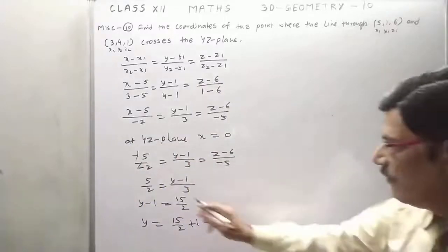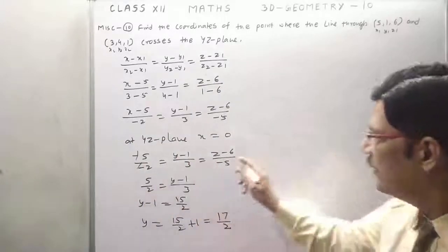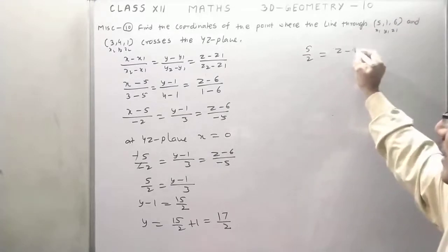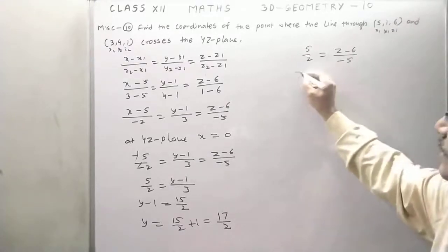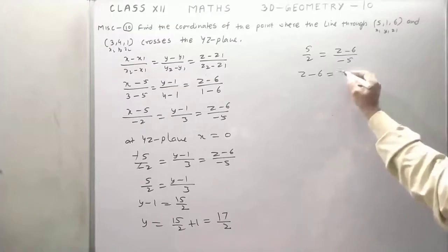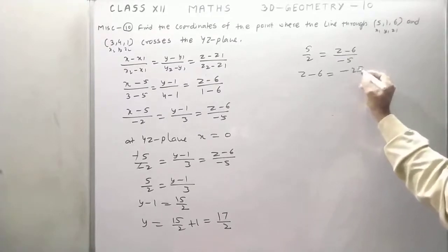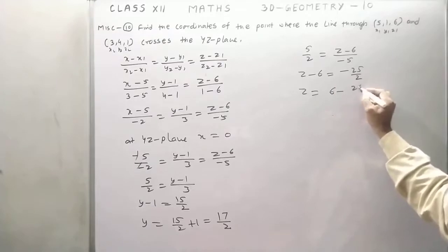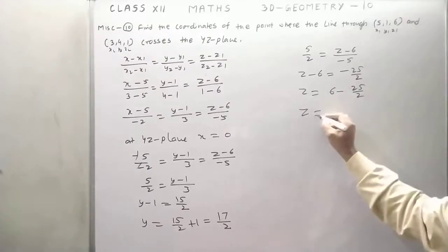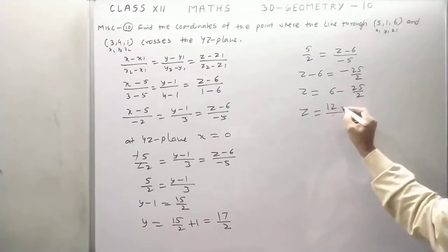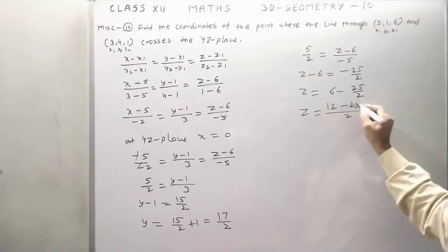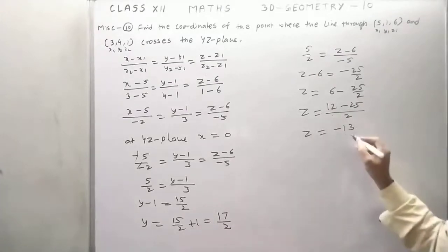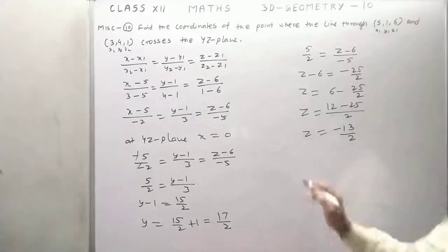For z, we take the first and third parts: 5 by 2 is equal to (z minus 6) upon minus 5, so z minus 6 is equal to minus 25 by 2. We get z is equal to 6 minus 25 by 2, or (12 minus 25) upon 2, that is minus 13 by 2.